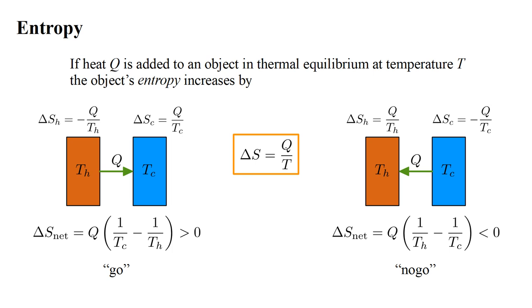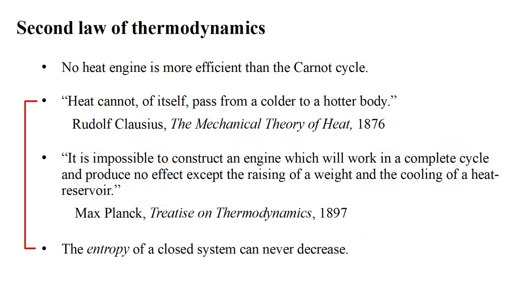If heat q flows from the cold object to the hot object, the signs of the entropy changes are reversed, and the entropy of the universe would go down. This process is a no-go, in violation of the second law. We see that this definition of entropy in the second law leads to the equivalence of the Kelvin statement, the entropy of a closed system can never decrease, and Clausius' statement, that heat cannot of itself pass from a colder to a hotter body.